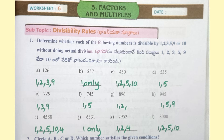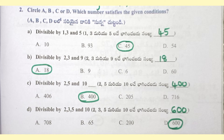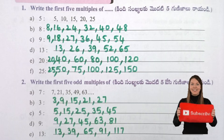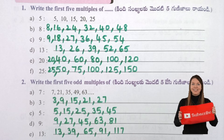6331 is divisible by 1, 2, 5, 10. 7952 is divisible by 1, 2, 5, 10. 8000 is divisible by 1, 2, 5, 10. Divisible by 1, 3 and 5 — C: 45. Divisible by 2, 3 and 9 — A: 18. Divisible by 2, 5 and 10 — B: 400. Divisible by 2, 3, 5 and 10 — D: 600.